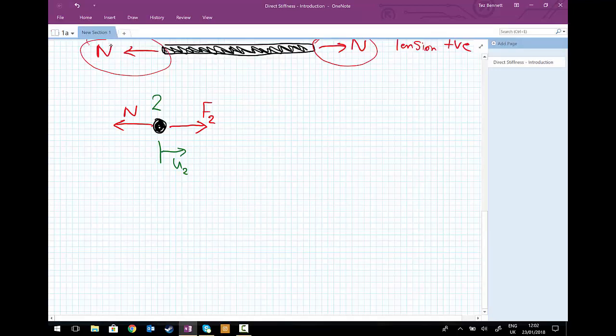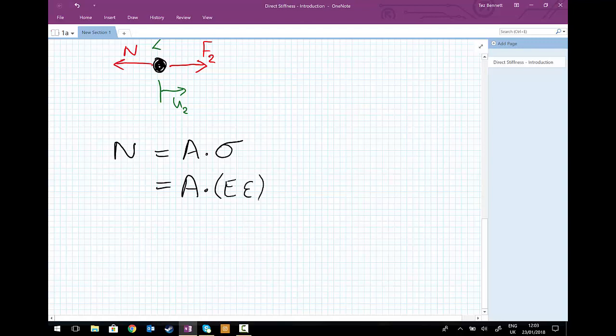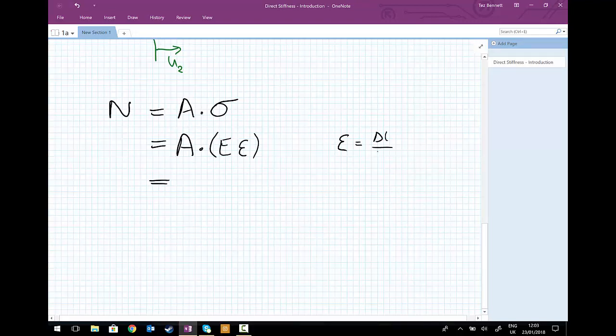So from strength of materials now, we know that the normal force N must be equal to the area of the bar, the cross-sectional area, multiplied by the stress in that bar. Again, from what we know strength of materials, we've still got the cross-sectional area. We can convert the stress sigma into Young's modulus times by the strain epsilon. And furthermore, one other thing we can take from the simple expression of strain is that the change in length of an element divided by the original length of the element is the strain. So let's write that just to the side equals delta L divided by L.